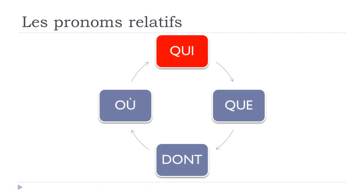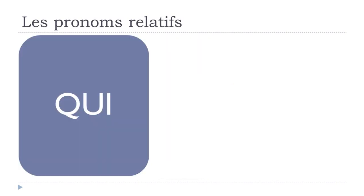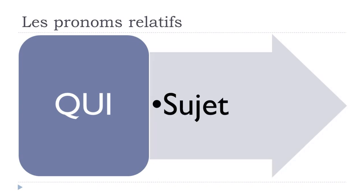The first one that we'll work with will be qui. Pronouns, as usual, are these little words that you use to avoid repetition if something was already said, or if you want to combine two different sentences into one. The first one, qui, we use it because it's the subject.